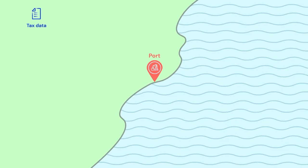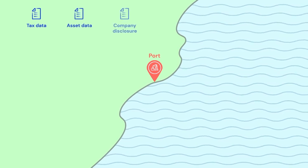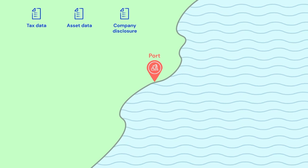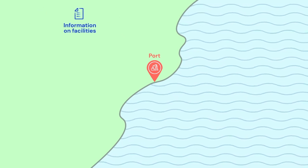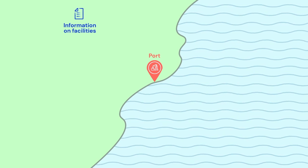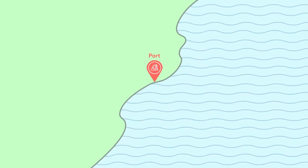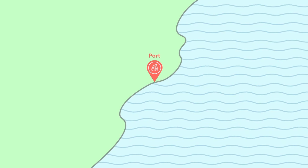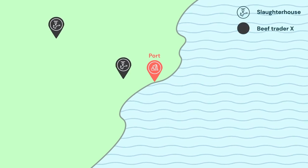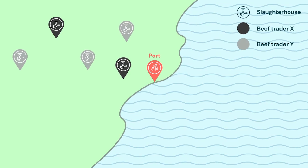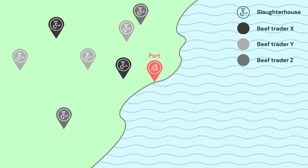Next, with tax and asset information and company disclosures like traceability reports, we can identify facilities used in commodity production, processing, and storage, and connect them to exporting and importing companies in the supply chain. For instance, we can identify links between a beef trader and a set of slaughterhouses, or map the location of palm oil refineries and mills.